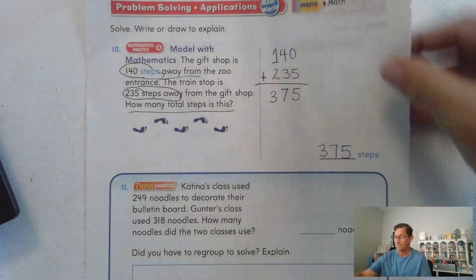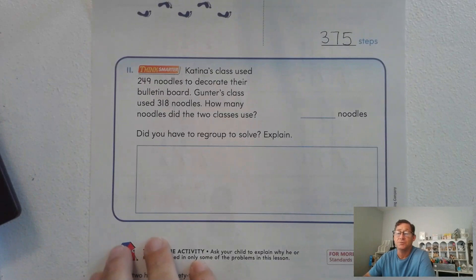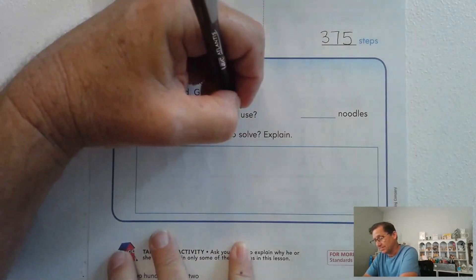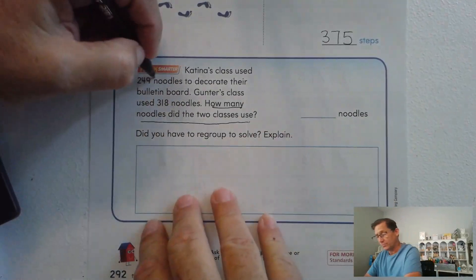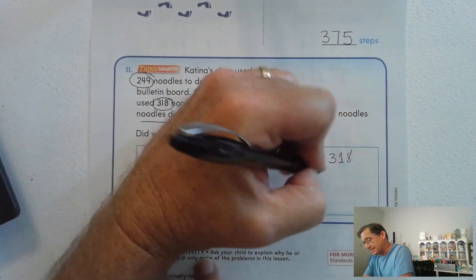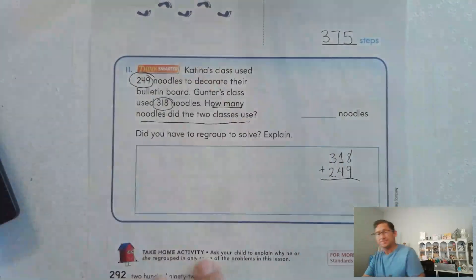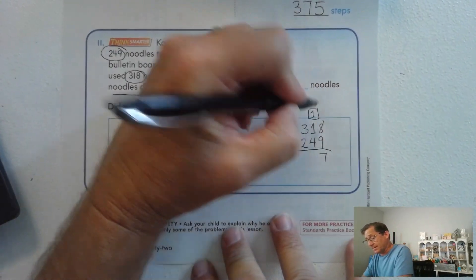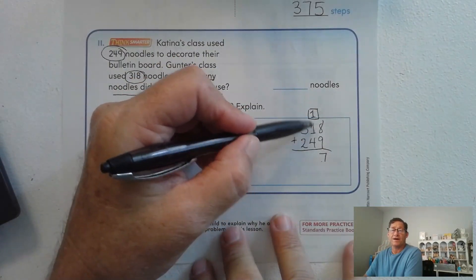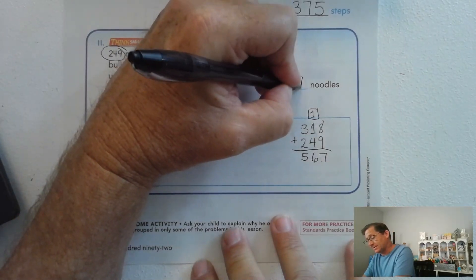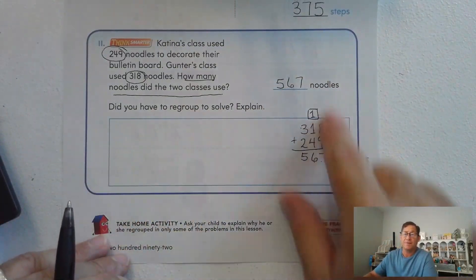The last problem: Katrina's class used 249 noodles to decorate their bulletin board, and Gunther's class used 318 noodles. How many noodles did the two classes use, and did you have to regroup to solve? So 318 plus 249: nine plus eight is seventeen — seventeen ones need to be regrouped as one ten and seven ones. Add the tens: four, five, six tens. Add the hundreds: 300 plus 200 is 500. Total: 567 noodles. Yes, we had to regroup the ones.